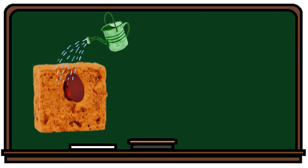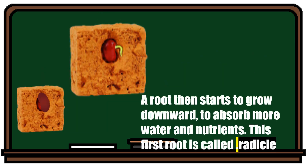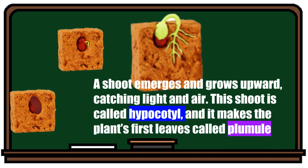Now, class, let us describe the germination stages of a seed. First, when a seed is exposed to proper growing conditions, it starts to take in water and oxygen through its seed coat. Second, a root then starts to grow downward to absorb more water and nutrients — this first root is called the radicle. Third, a shoot emerges and grows upward, reaching for light and air. This shoot is called the hypocotyl, and it produces the plant's first leaves, called the plumule.